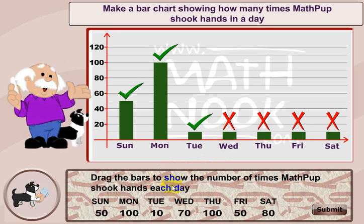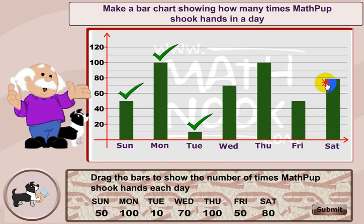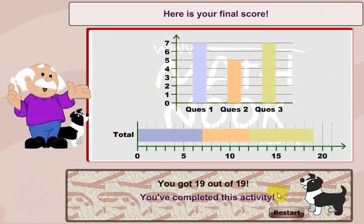Let's go ahead and correct those. On Wednesday, there's 70. Thursday, he wants 100. Friday, I need to put in 50. Saturday, 80. Let's check — they all should be correct, and there we go. It tells me on each of the three activities how well I did, and it shows me the final score.